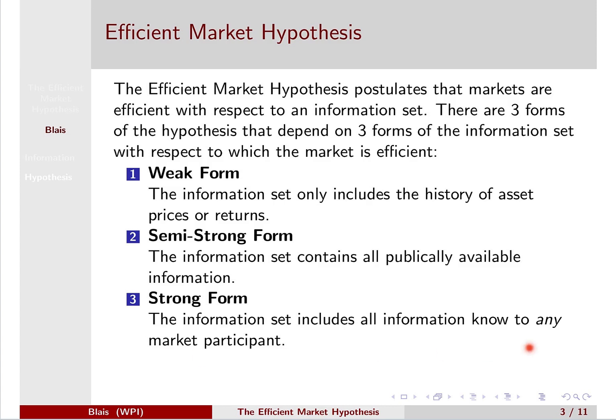The strong form claims that the markets are efficient with respect to information that anybody has. The idea is that a market participant who has private information that no one else knows — this form hypothesizes that their private information is already priced in. So if that person revealed their private information to everyone, it would not affect prices.